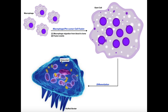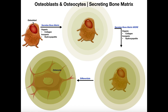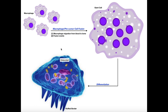In contrast, osteoclasts come from a different cell lineage and function in an opposite process called bone resorption. While osteoblasts perform bone deposition, which increases the density of bones, osteoclasts actually remove pieces from the matrix — collagen and calcium — thereby decreasing bone mineral density. That process is called bone resorption.